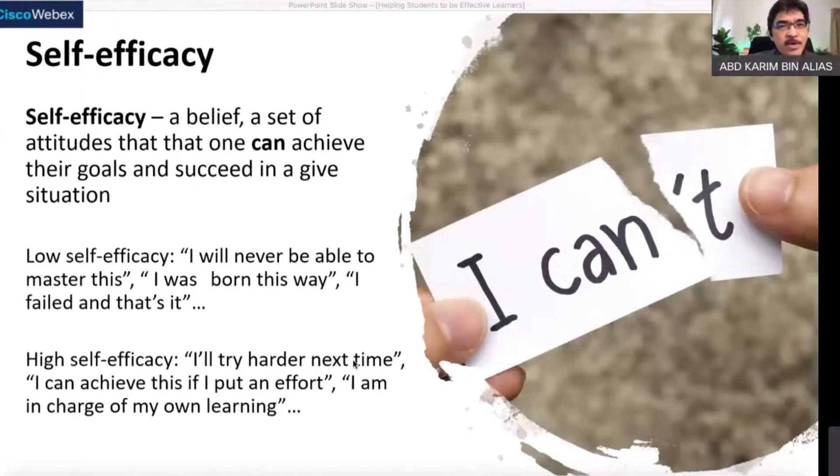'I will try harder next time', 'I can achieve this', 'I know I have the talent, I have the strength, so I'll put more effort next time'. 'I know I have not put much effort' - that is the metacognition part, thinking about their own thinking, about what they have been doing.